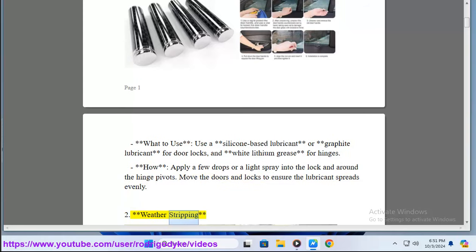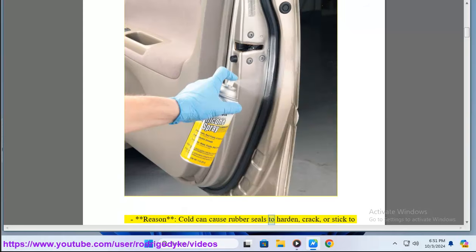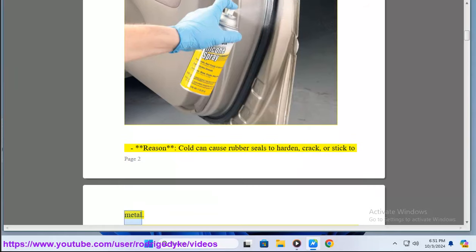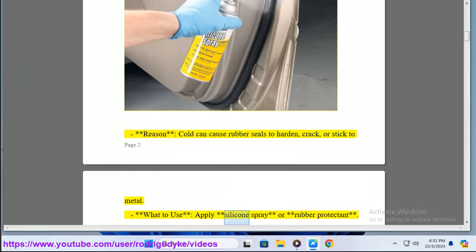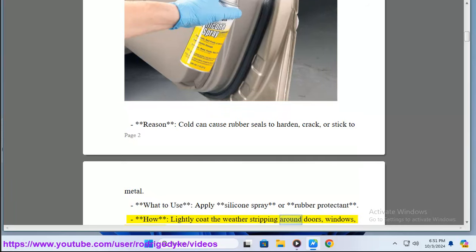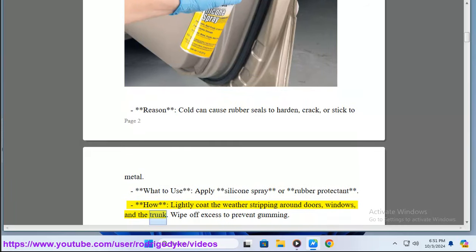2. Weather Stripping. Cold can cause rubber seals to harden, crack, or stick to metal. What to use? Apply silicone spray or rubber protectant. How? Lightly coat the weather stripping around doors, windows, and the trunk. Wipe off excess to prevent gumming.